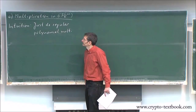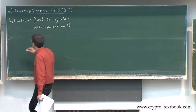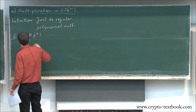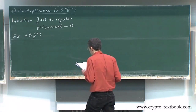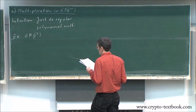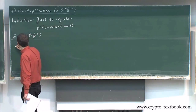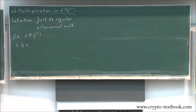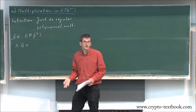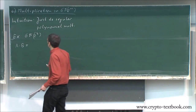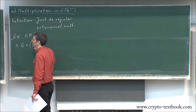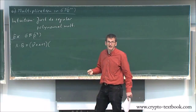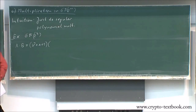Let's start with an experiment. Let's not give a theorem but let's look at what's happening. We use GF(2^3). We want to multiply a times b, and we take the same polynomials as before. We're not adding the polynomials, we're multiplying them. It's x squared plus x plus one times the other polynomial.